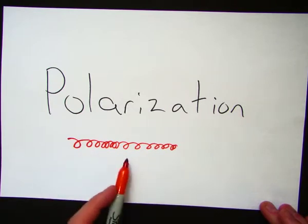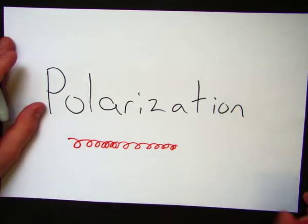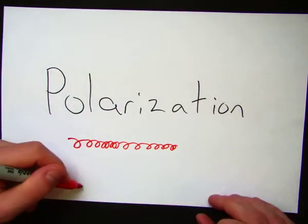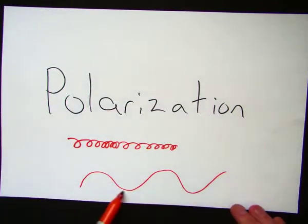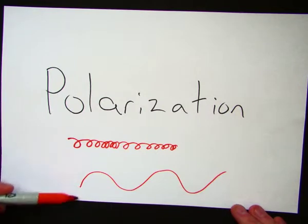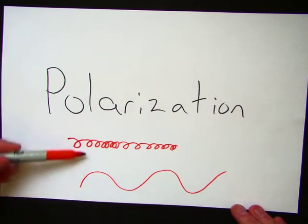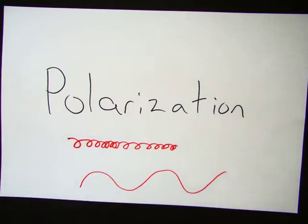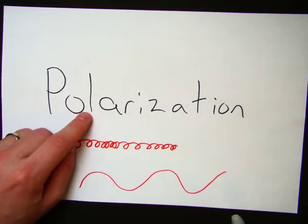Light doesn't behave like this. Sound does, but light doesn't. Light on the other hand does something like this. It basically is a transverse wave. How do we know this? That this is a transverse wave. In other words, I move the string up and down. In other words, perpendicular to the direction of the motion of the wave. We know this based on something called polarization.